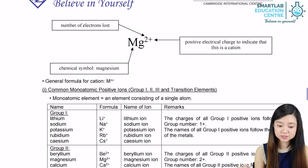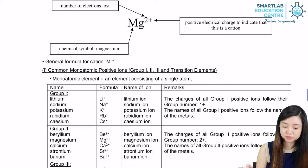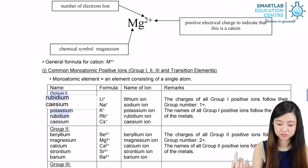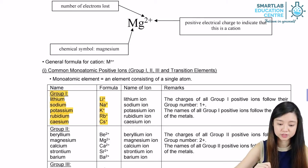So we have the Group 1 metal elements. For lithium, sodium, potassium, rubidium and caesium, they all have one outermost electron on the outermost shell. So they tend to be giving away the one outermost electron. So the formula will give you a plus one.